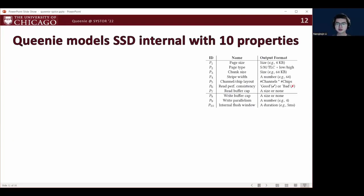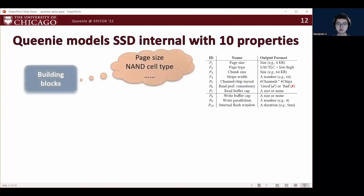The term properties covered by QINI are shown on the right. We pick the term properties based on three aspects. The first aspect is the basic building blocks of an SSD, such as the page size, which is the minimum read-on-write unit inside the SSD, and the NAND cell type, such as SLC, MLC, and TLC.